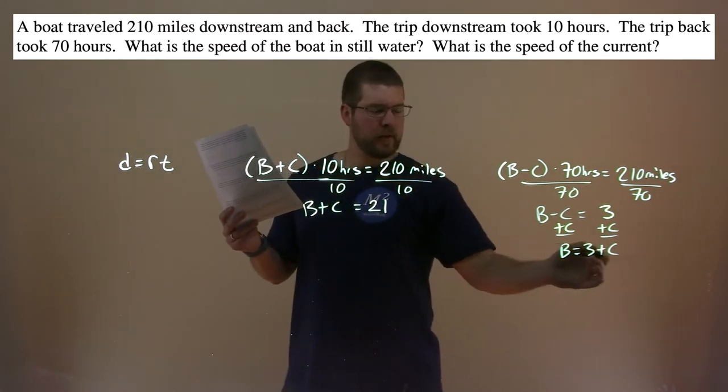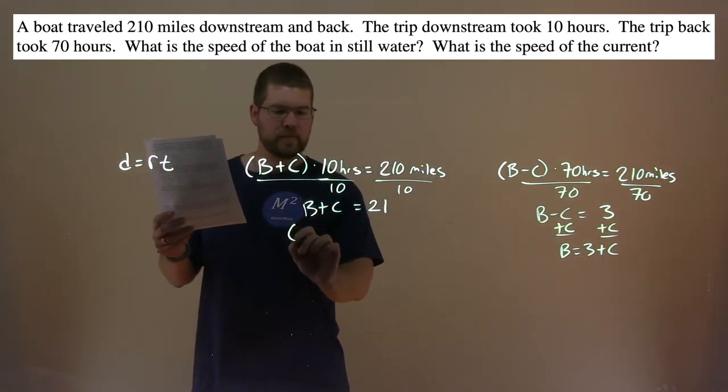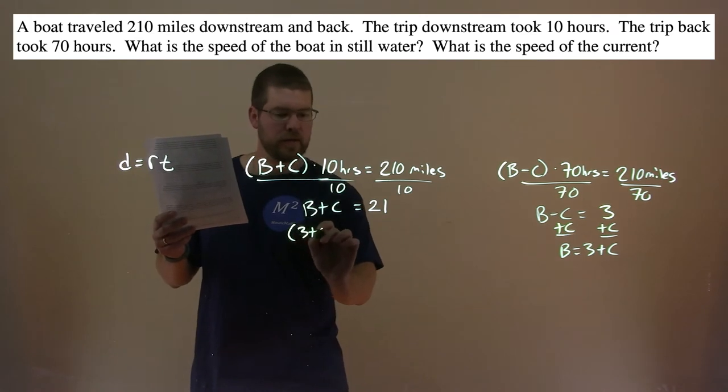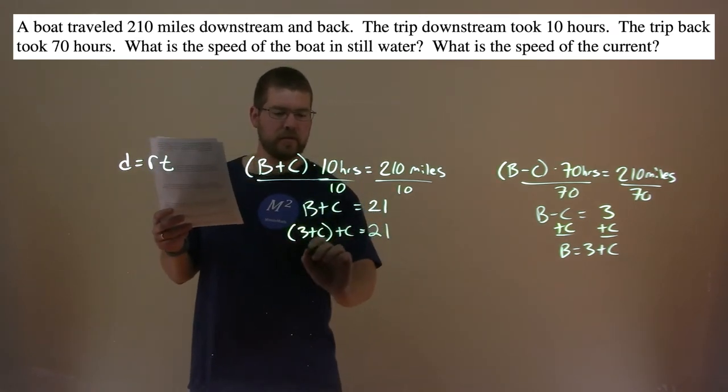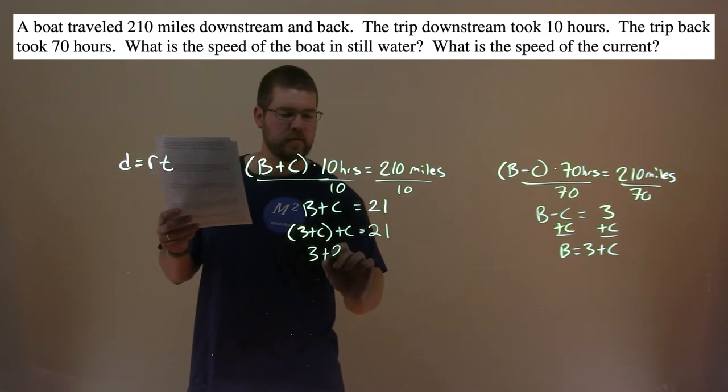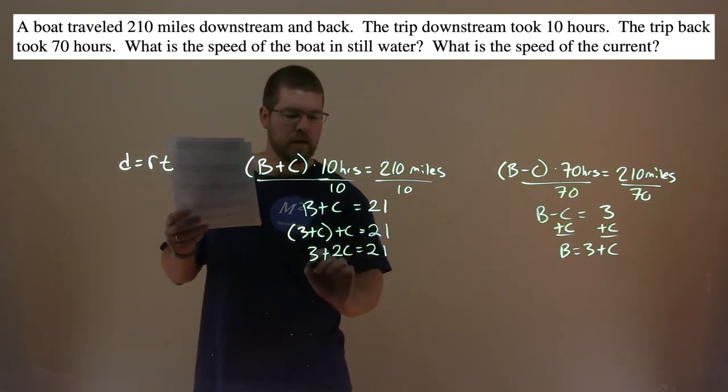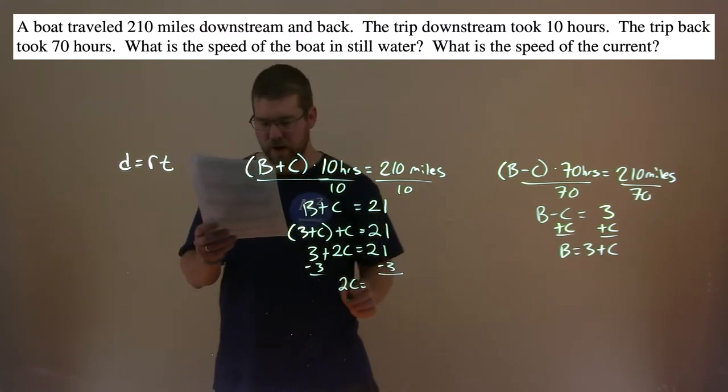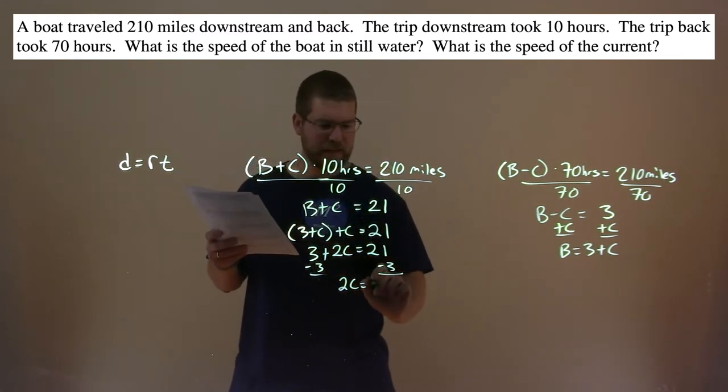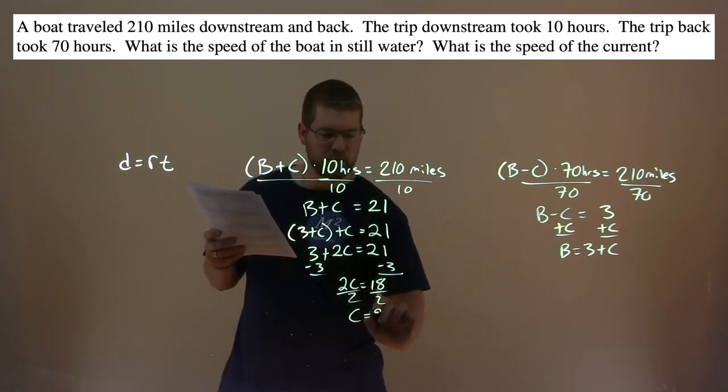We take that value for B, 3 plus C, and plug it in for this B. So, instead of B, I have 3 plus C here. Plus C equals 21. 3 plus, well, C plus C is 2C. That's 21. Minus 3 to both sides. And 2C equals 21 minus 3, which comes out to be 18. Divide both sides by 2. And C equals 9.